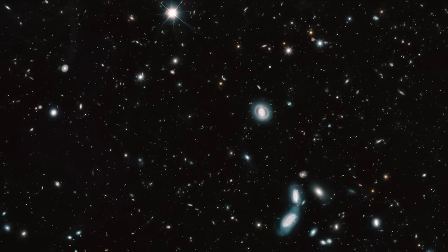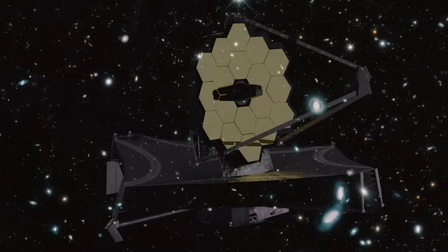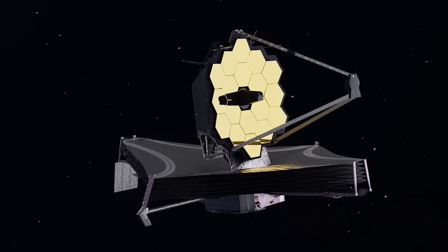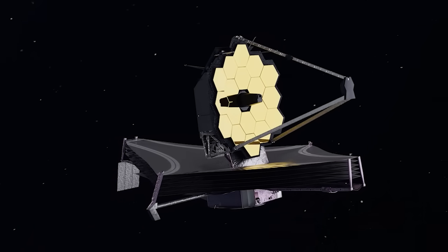When an exoplanet passes in front of a star, we observe a decrease in the luminosity of the star, which is already an important indication of the presence of the planet.